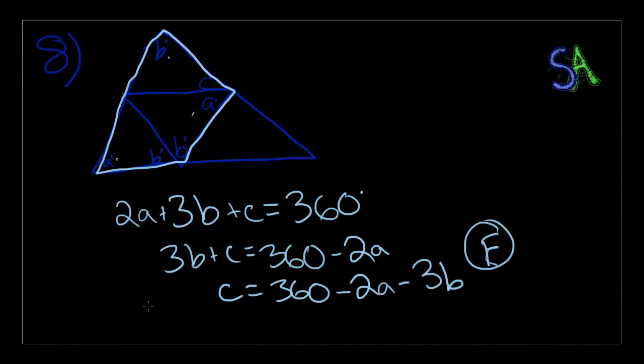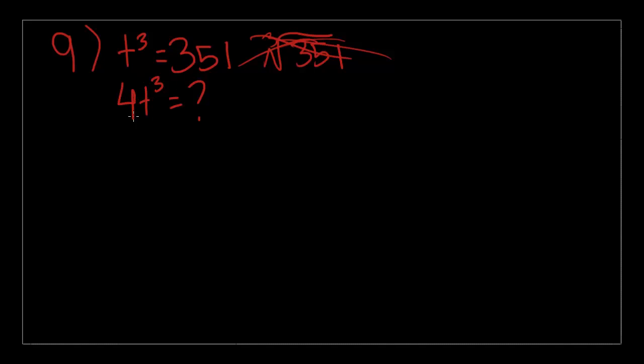Now we're done with the multiple choice problems of this section, and we're going to move on to the student response. Number 9, which is just an equation. If T cubed is equal to 351, then what is the value of 4T cubed? Instead of trying to do a cube root of 351, which is a messy process, you're just multiplying 4 to the T cubed, and T cubed is 351. So, 351 times 4 will be equal to 1404, and that's the correct answer.